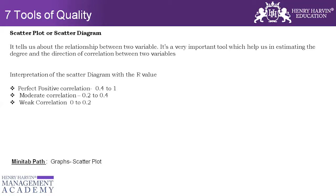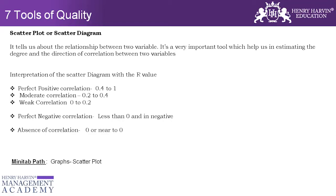Weak correlation is when the R value is between 0 and 0.2. Perfect negative correlation occurs when the R value is less than 0 — it could be minus 1 or any negative value. If the R value is zero or near to zero, we say there is an absence of correlation, meaning no correlation between the two variables.